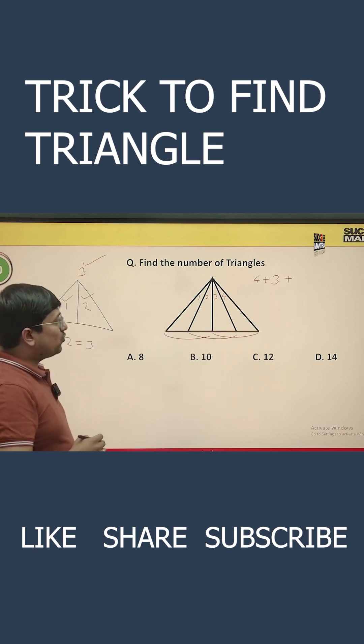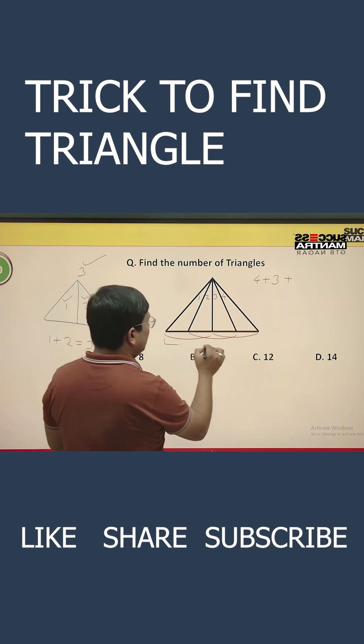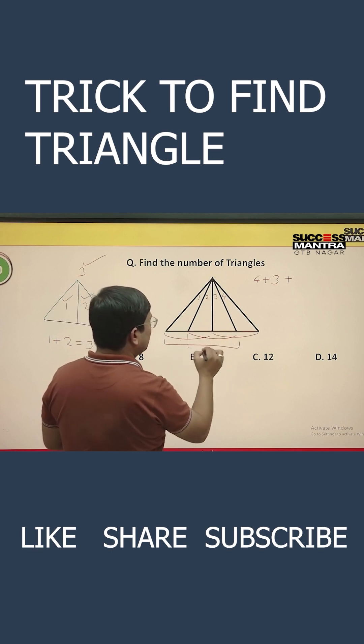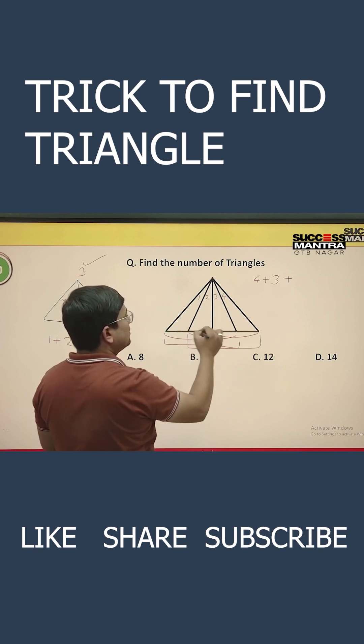Now, if you club three triangles together like one, two and three, this is one triangle. And then two, three and four, this is another triangle.